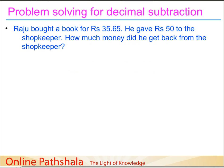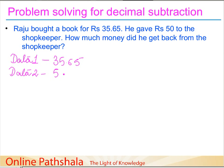Now let's solve a word problem involving subtraction. Raju bought a book for rupees 35.65 and gave rupees 50 to the shopkeeper. How much money did he get back? The data is: Raju bought a book for rupees 35.65, and he gave rupees 50 to the shopkeeper.